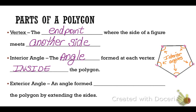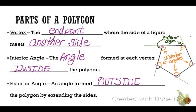We also have exterior angles, and that is an angle formed outside the polygon by extending the sides. I've extended the sides of this polygon, and the angles formed at each of those extensions are called exterior angles. Notice that there is only one exterior angle for each vertex.